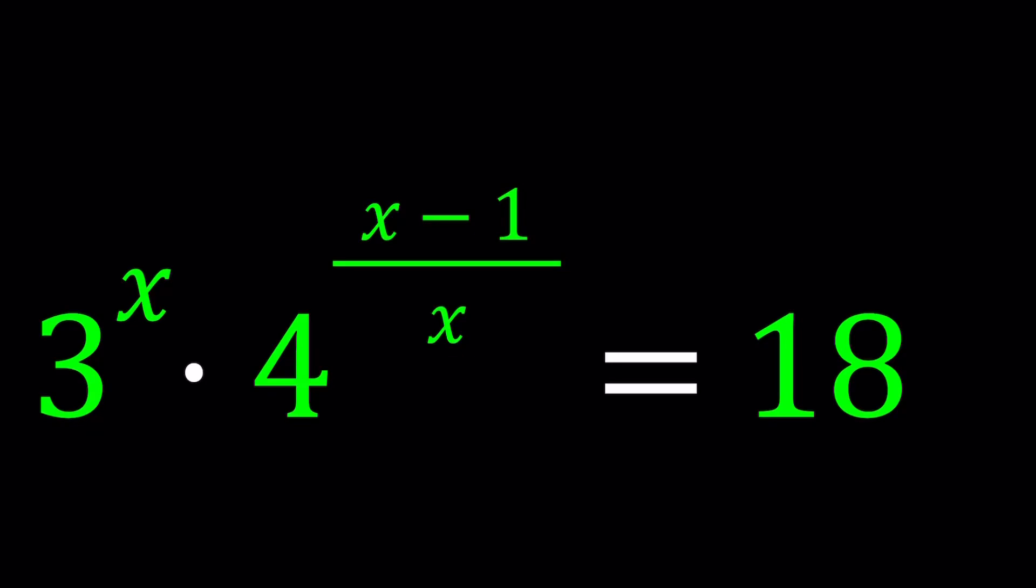Hello everyone, in this video we're going to be solving a nice exponential equation. We have 3 to the x times 4 to the power x minus 1 over x equals 18, and we're going to be solving for x values. At this point, feel free to guess, but do not share your answers yet. Does this equation have any solutions? Is there anything you can guess? Or does it have no solutions? Let's find out.